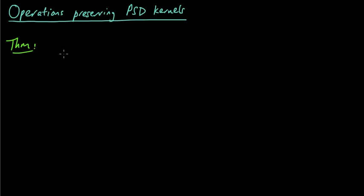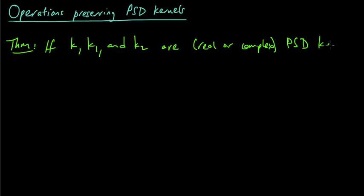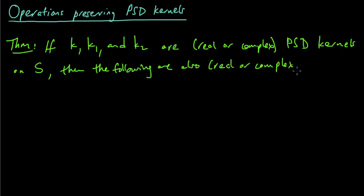So we have this theorem, and we're going to list a bunch of these operations. If k, k1, and k2 are real or complex valued positive semi-definite kernels on some arbitrary set S, then the following are also real or complex, respectively, positive semi-definite kernels.